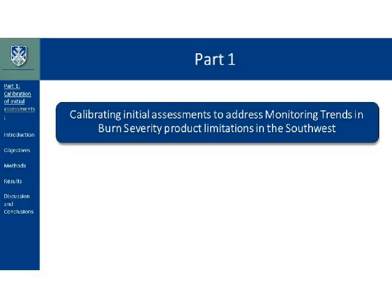Now I'll get to part one. I'm going to talk about applying a calibration to the MTBS initial assessments, which eventually gave me a larger dataset from which to analyze the trends. This whole part came about unexpectedly — I set out to analyze trends in burn severity using MTBS data, and the more I worked with MTBS products, the more limitations I noticed. I'll discuss what those limitations were, how I addressed them, and what the resulting data looked like. This part will be relevant to all those using MTBS data for any reason.